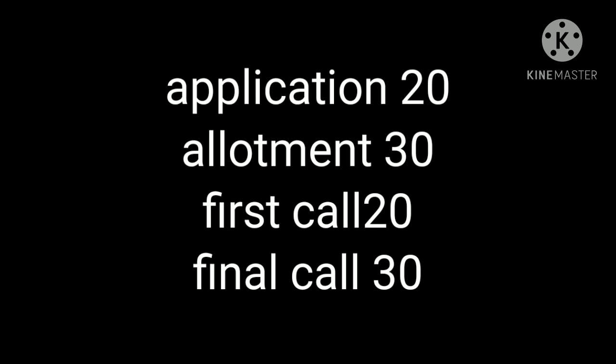Out of the 100 rupees, 20 is received on application, 30 is received at the time of allotment, 20 at the time of first call, and 30 at the time of final call. Now we will move to the journal entries.